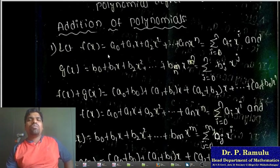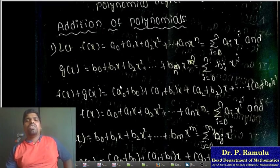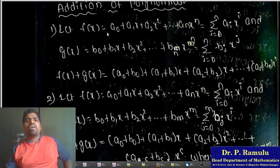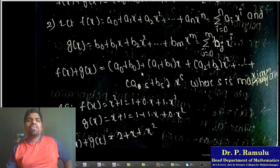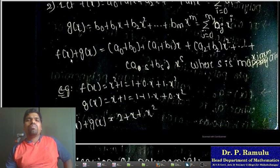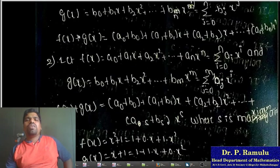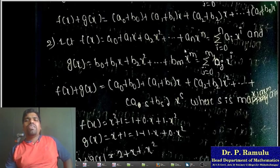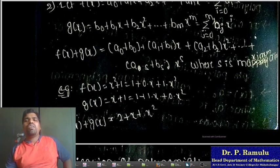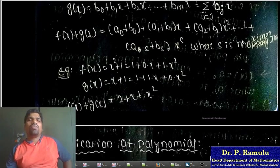Addition of two polynomials: taking f(x) = sum a_i x^i and g(x) similarly, we can add constant terms, x terms, and x-squared terms to get f(x) + g(x). This addition applies to both finite and infinite polynomials. Example: f(x) = x^2 + 1 and g(x) = x + 1. Adding: constant terms 1+1=2, x terms give x, x-squared terms give x^2. The addition of the two polynomials gives x^2 + x + 2.